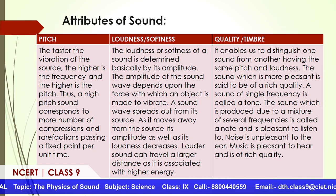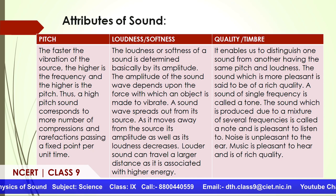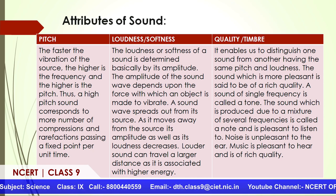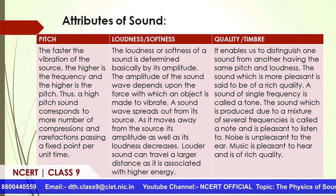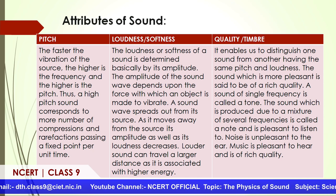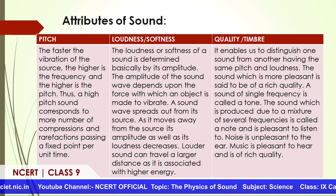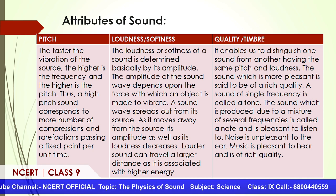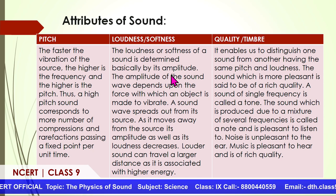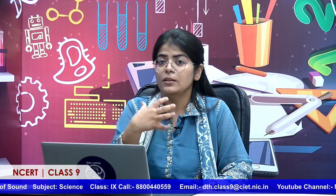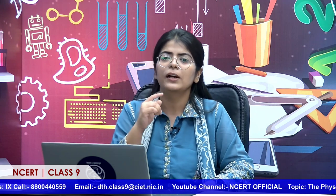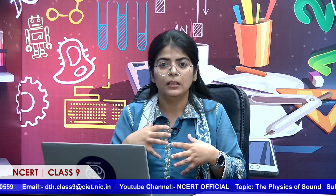Then there is loudness. Am I speaking softly or loudly? When you listen to music, you can differentiate how soft or loud it is — some music feels better at low volume, some at high volume. That difference lies in loudness. Loudness comes from amplitude. If I speak at high amplitude, you hear a louder sound; if I speak softly, you hear a quieter sound. It is the amplitude which creates either loudness or softness in the voice.